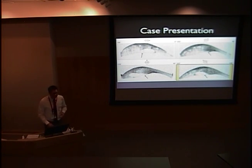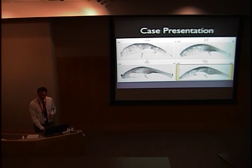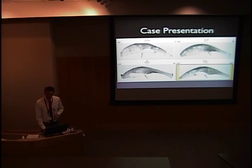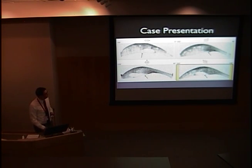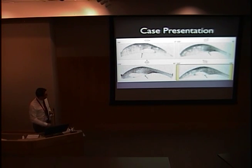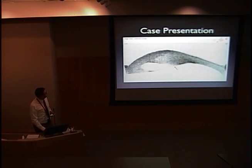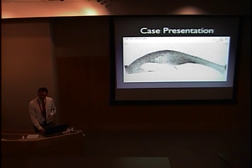The arrow that I've added to these images denotes Descemet's membrane, the second-to-last layer of the cornea. Normally this is a thin structure, as we all know. However, in his case, it has bulged out. You can see vacuoles of edema — there's one large vacuole just above Descemet's membrane. This is a close-up view showing how significant his edema is. In cases of keratoconus, this is known as hydrops, which I'll be discussing in some detail later.